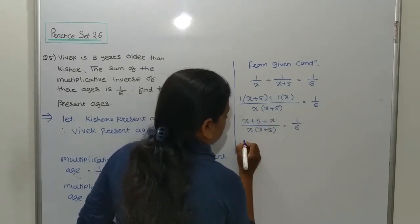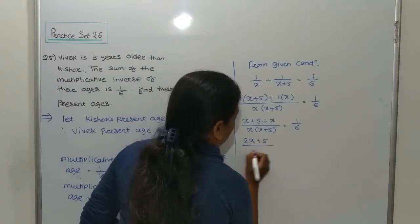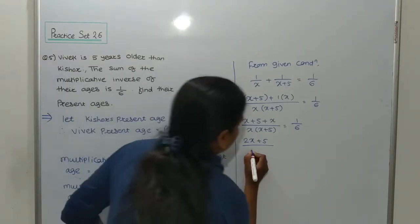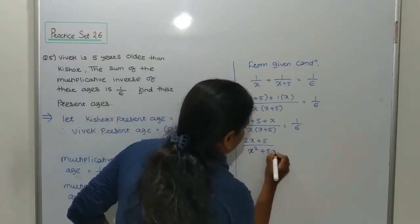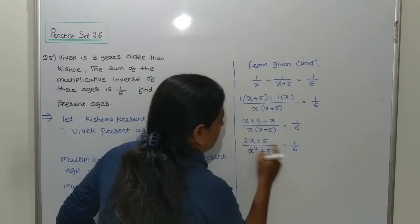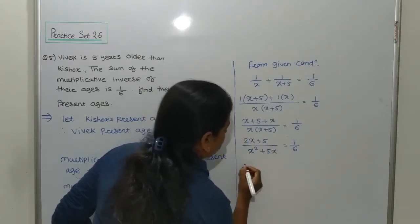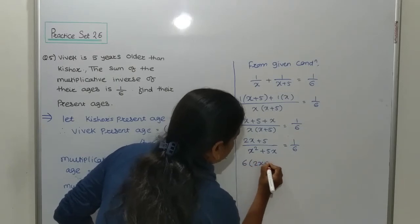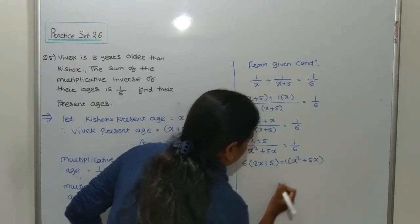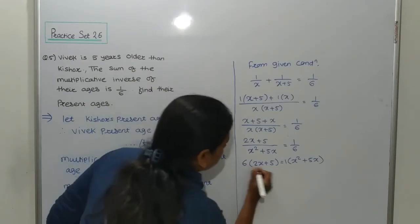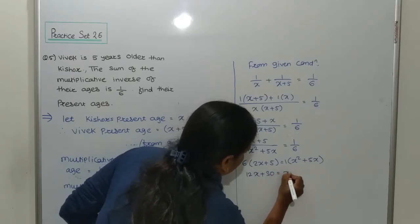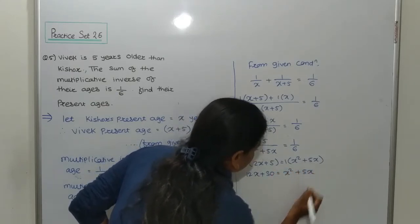Now, x plus 5 plus x upon x(x plus 5) is equal to 1 upon 6. That gives us 2x plus 5 upon x squared plus 5x is equal to 1 upon 6. Now just cross multiply: 6(2x plus 5) is equal to x squared plus 5x. That means 12x plus 30 is equal to x squared plus 5x.